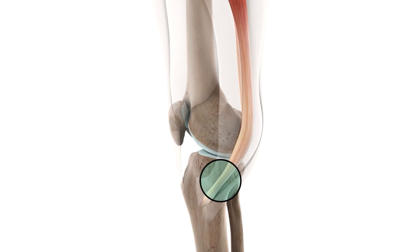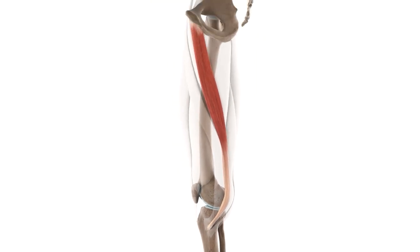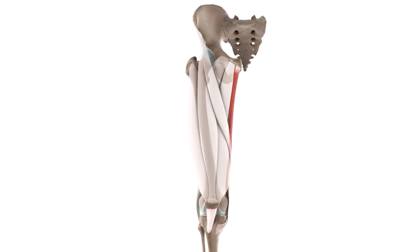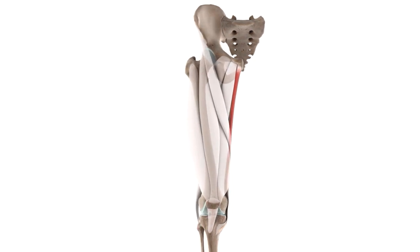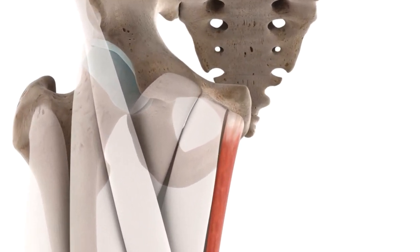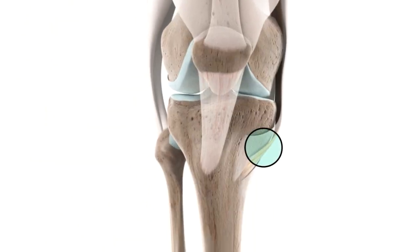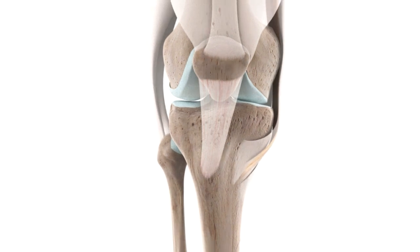This common tendon inserts into the superior part of the medial surface of the tibia. Let's rotate the model so we can see the gracilis from the front. Here are the same attachments seen from the frontal perspective: the inferior pubic ramus, the pes anserinus, and the superior part of the medial surface of the tibia.